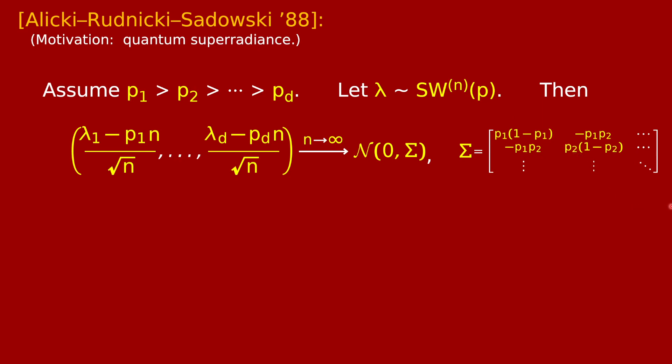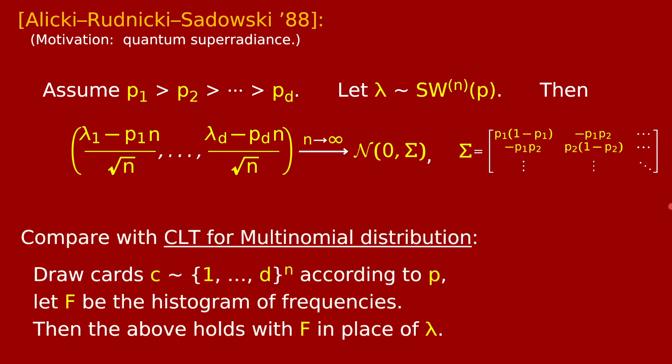What I'd really only like you to note about this theorem statement is this is literally exactly the same central limit theorem you get for the basic multinomial distribution. Just imagine going back to the Pokemon process, you draw n cards randomly according to the probability distribution p, and rather than plugging them into this RSK process, just do the natural thing of counting up the frequencies and let f be the histogram of frequencies. Then it's very ancient that a central limit theorem holds for this, and the central limit theorem is exactly the same.